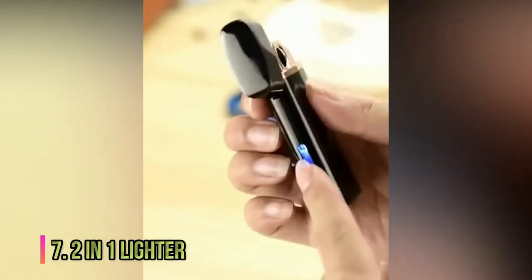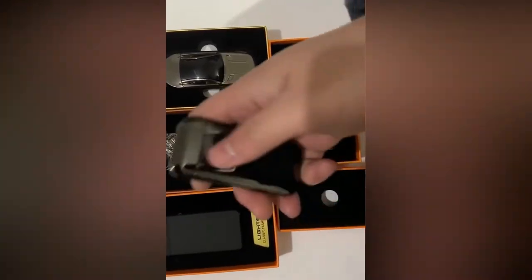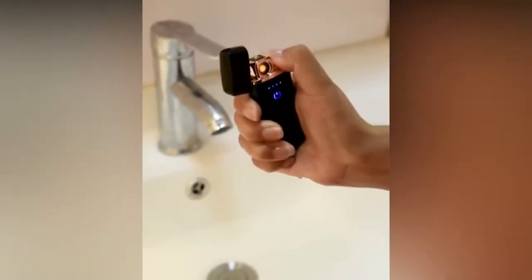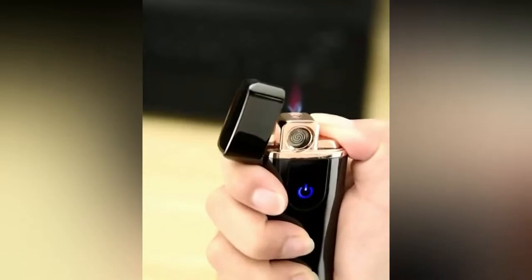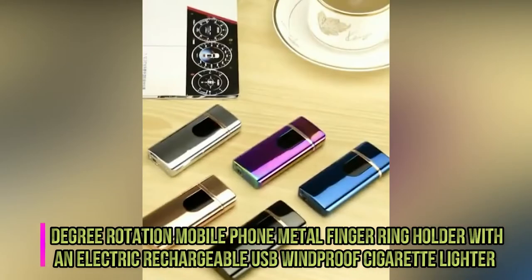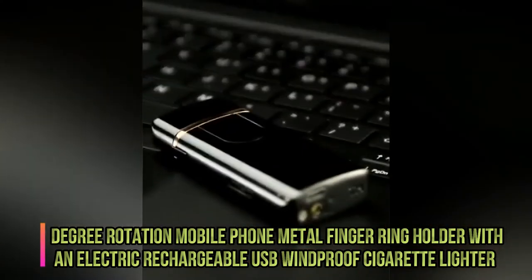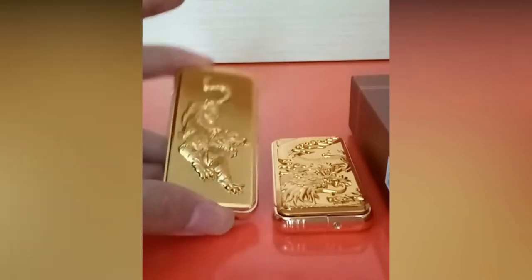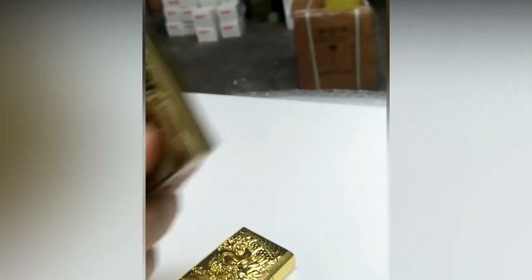Number 7. Two-in-One Lighter. Not just your ordinary lighter, this lighter has a lot of function. You can use it as a lighter to light cigarettes, as a phone ring to hold your phone, or as a cell phone holder to watch videos. It has a 360-degree rotation mobile phone metal finder ring holder with an electric rechargeable USB windproof cigarette lighter. You can charge it using any powered USB port, such as your laptop or power bag. That enables you to use a lighter whenever and wherever you want.